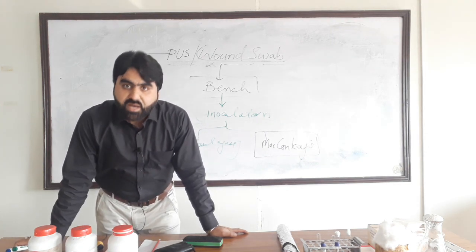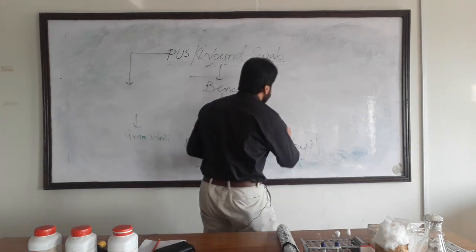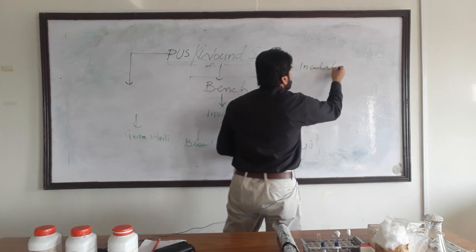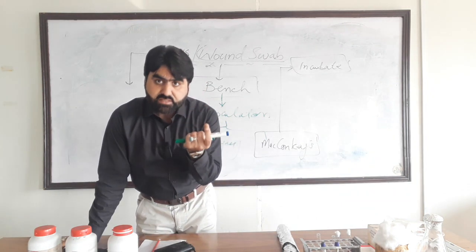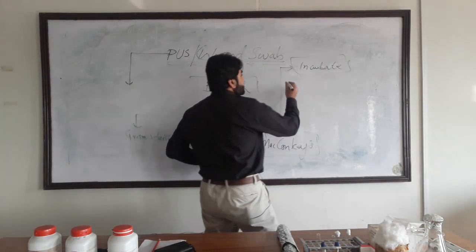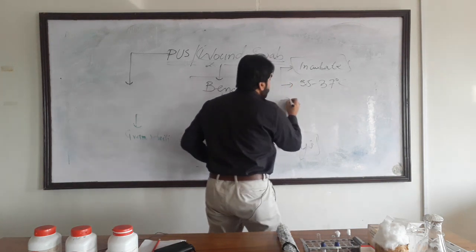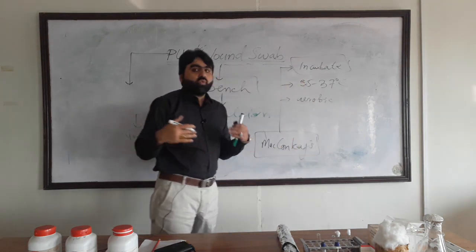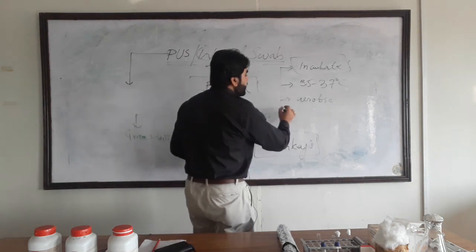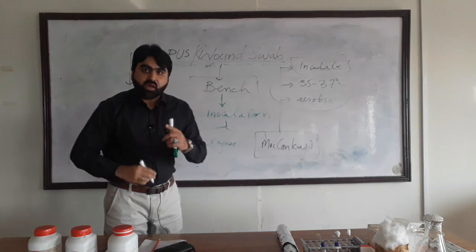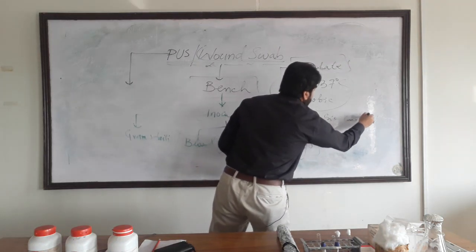After inoculation, you will incubate the two plates for bacterial growth, because bacteria need 18 to 24 hours to produce isolated and characteristic colonies. We will incubate these media at 35 to 37 degrees Celsius — the optimum temperature for human pathogens — under aerobic conditions. If anaerobic pathogens are suspected, we will inoculate two blood agar plates: one incubated under aerobic condition and the second under anaerobic condition.